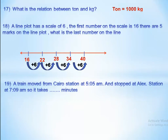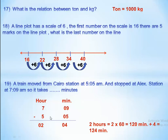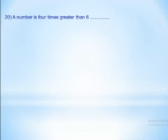A train left Cairo station at 5:05 and stopped at Alexandria station at 7:09 a.m. How many minutes did the journey take? We find the elapsed time: subtract minutes — 9 minus 5 equals 4; subtract hours — 7 minus 5 equals 2. Two hours equals 2 times 60 equals 120 minutes, plus 4 minutes equals 124 minutes.